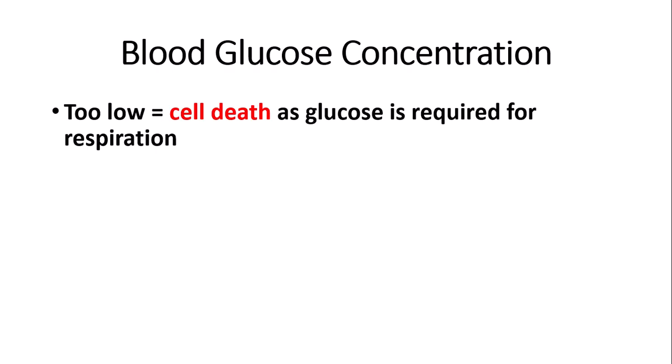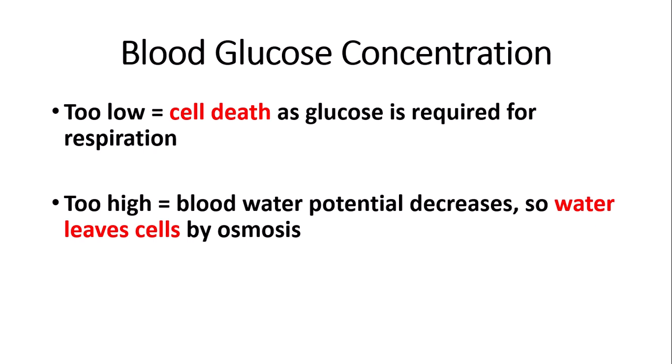The next factor is blood glucose concentration, sometimes known as blood sugar. When blood glucose concentration is too low, this results in cell death, as glucose is required as a substrate for respiration. When there is too little glucose, respiration can't happen at a high rate, since glucose is the main substrate used for both anaerobic and aerobic respiration. On the contrary, if glucose concentration is too high, the water potential of the blood is decreased.